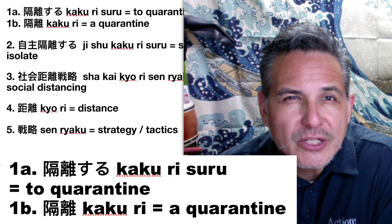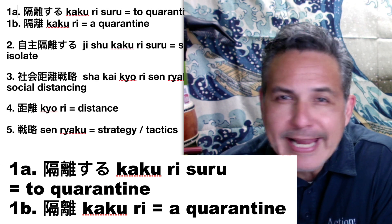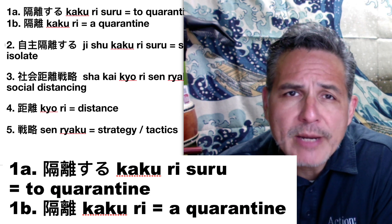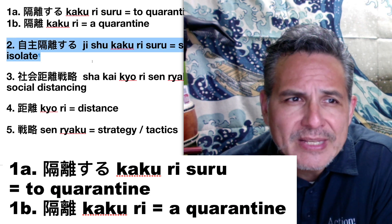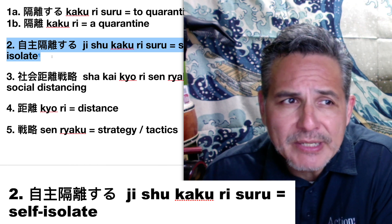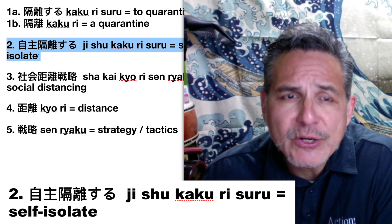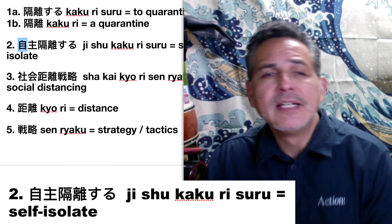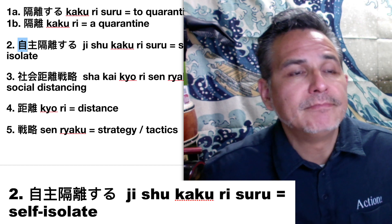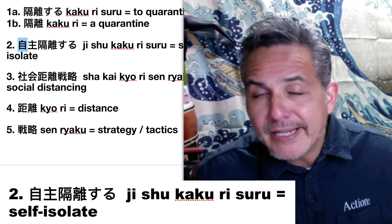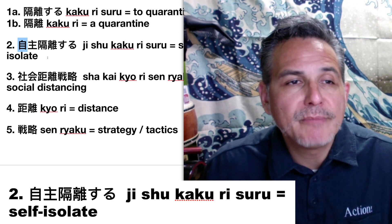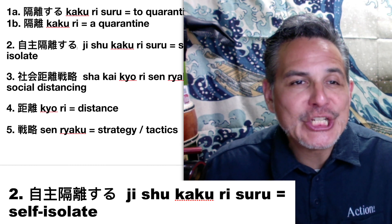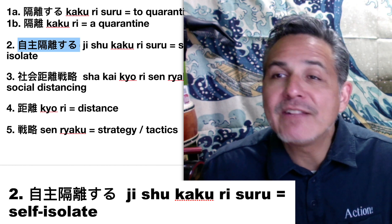You should load up some NHK news or watch some Japanese news and you will hear these words. Next word that you see quite a bit in western media is self-isolate. In Japanese that's jishu kakuri suru. You might recognize the first kanji as self, like in jidori — selfie — or jitensha — bicycle — or jidousha — car. One more time: jishu kakuri suru — self-isolate.